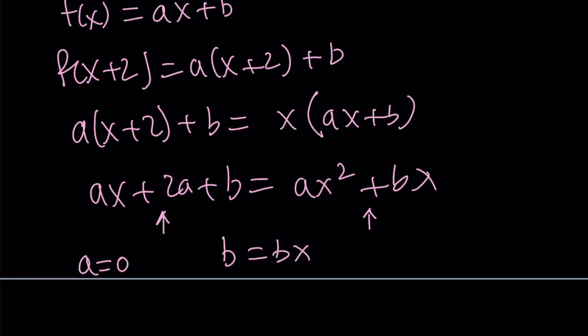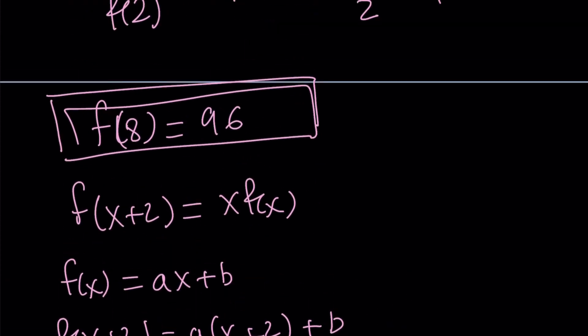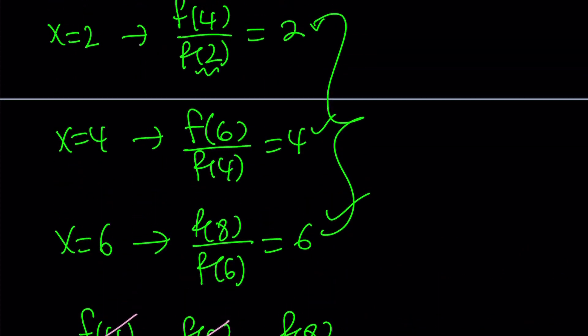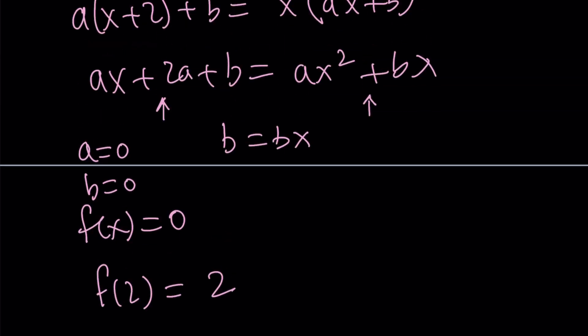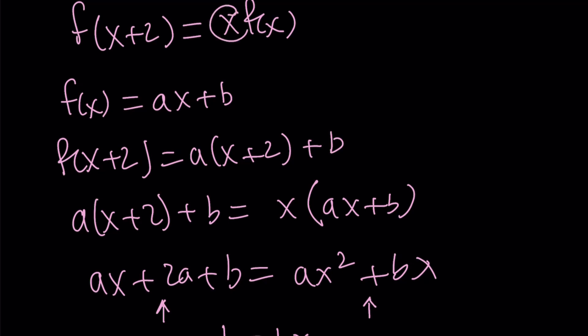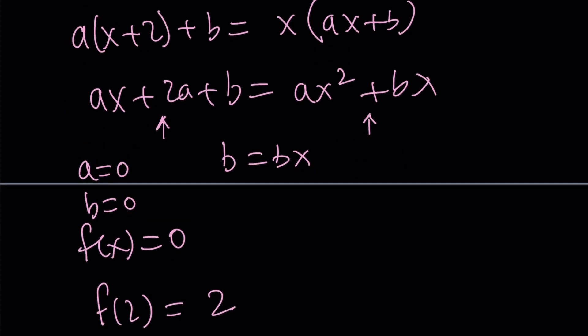But this is not true for all x values. If b is equal to 0, then it's going to be true, right? So we have a equals 0, b equals 0 gives you f(x) equals 0. It gives you the 0 function. Now, does the 0 function satisfy this? It does, except for the fact that f(2) is not 2. So you also have to consider when you are experimenting with different functions, you also have to satisfy that f(2) equals 2. So f(x) obviously is not linear. Can it be quadratic? Probably not. The problem here is that you multiply f by x. So if f(x) is of any degree, this is just going to increase the degree of f if it's a polynomial. So they're not going to have the same degree and that's a problem. So it's not going to be a polynomial.